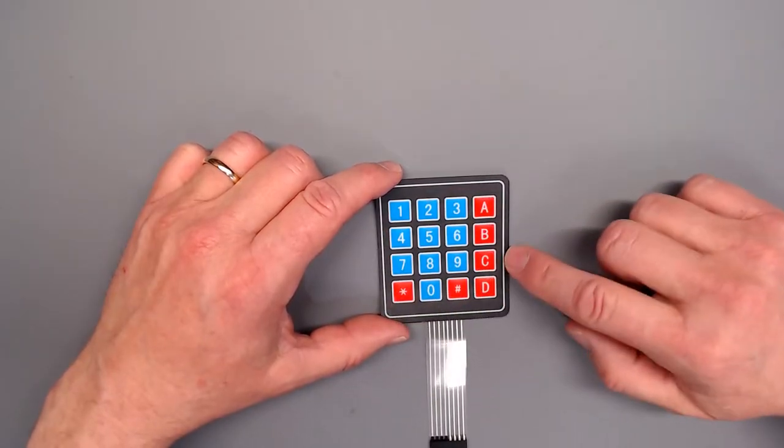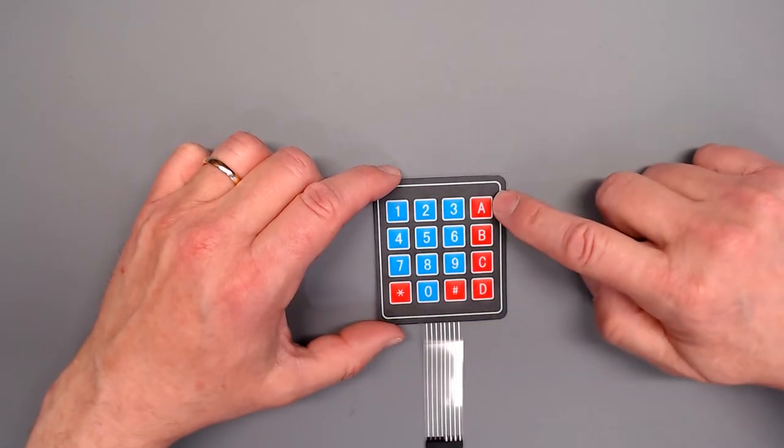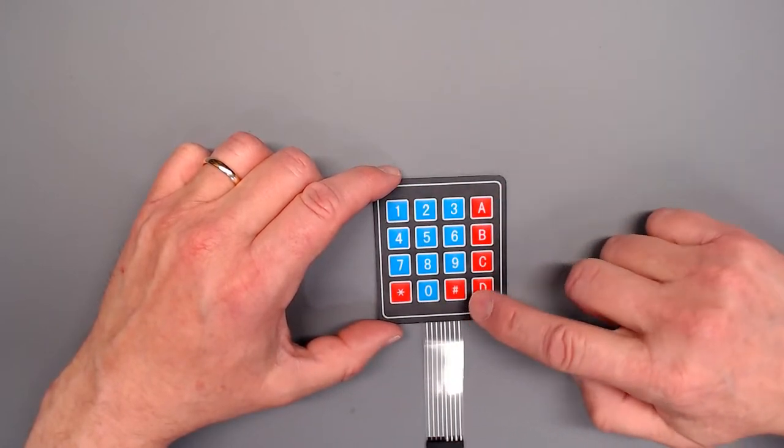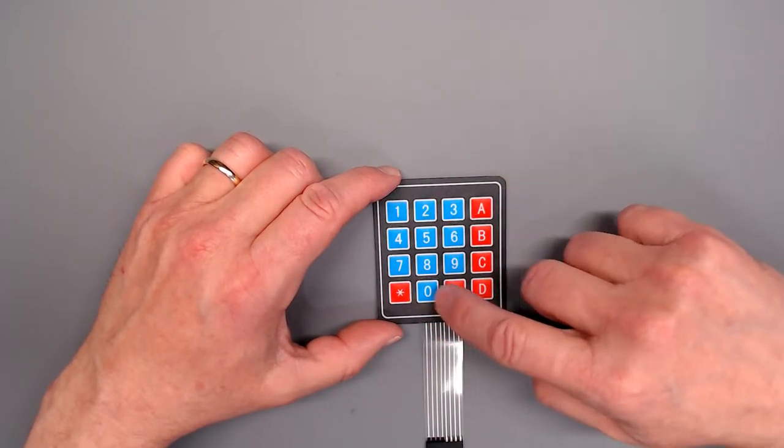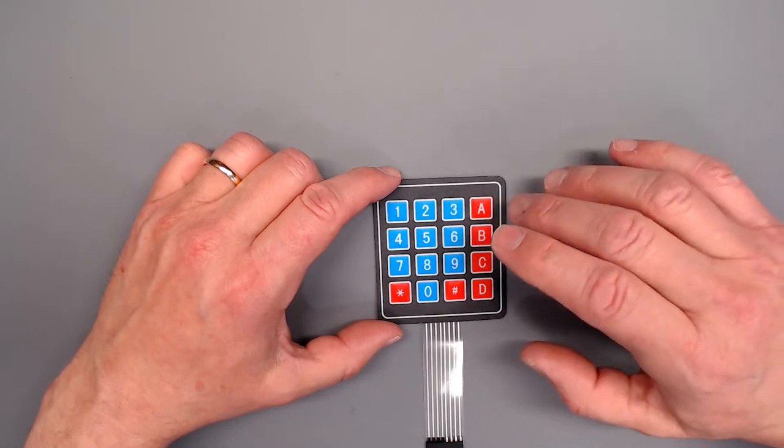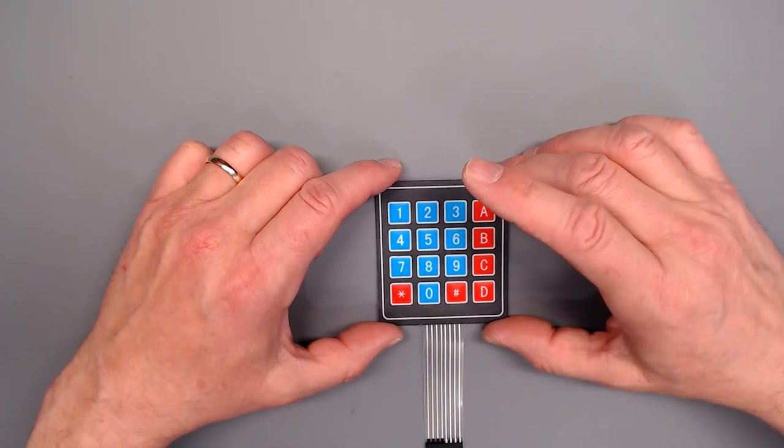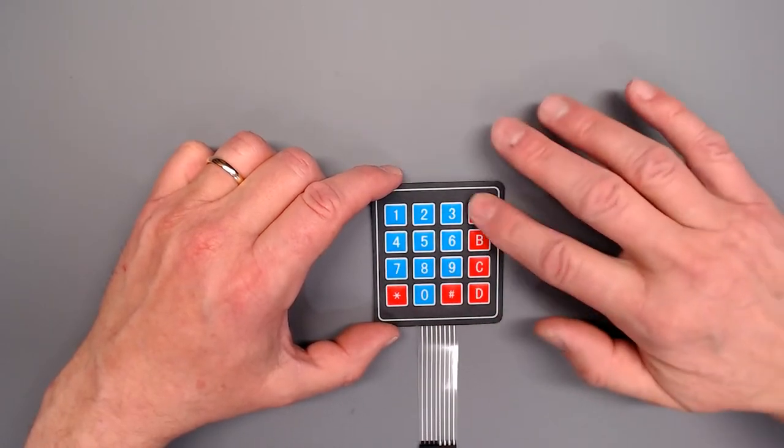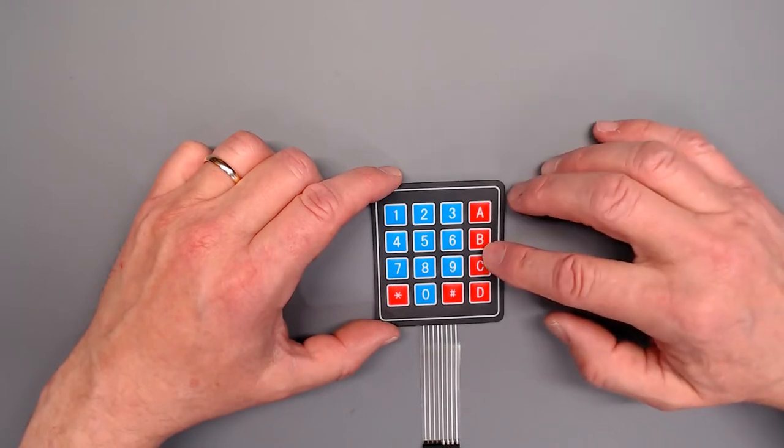Matrix keypads come in a variety of sizes. This happens to be a 16 button, typical layout. You can get different layouts, different configurations. 12 button are very common, kind of like a telephone. More buttons, less buttons, they can be a single strip, etc. But this is a very popular style that's used in many projects that us makers work with.